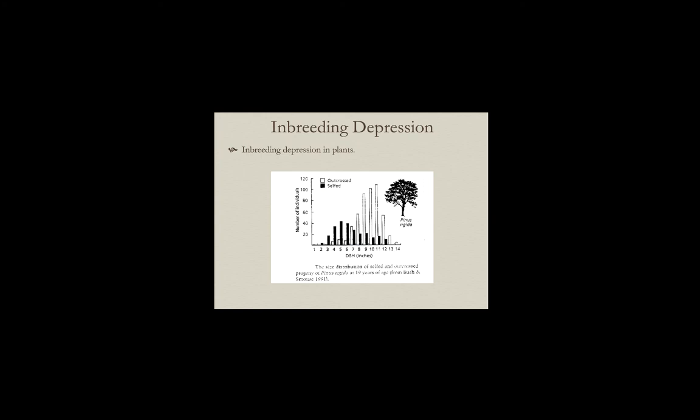This has important implications for forest production. In a pine plantation comparing outcrossed trees versus trees produced by selfing at the same age, the diameter at breast height (DBH) of selfed, inbred plants is significantly lower than those that are outcrossed. This has practical implications if you're trying to grow trees as quickly as possible for lumber and other wood products.